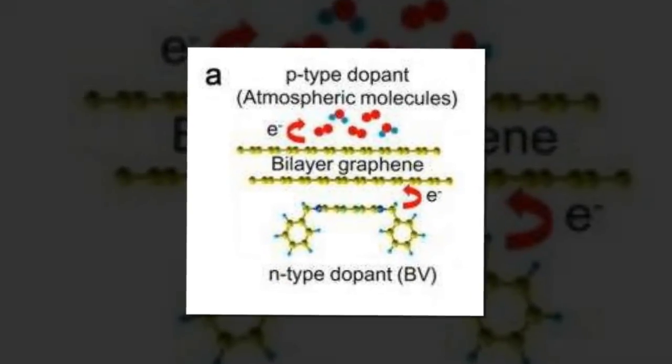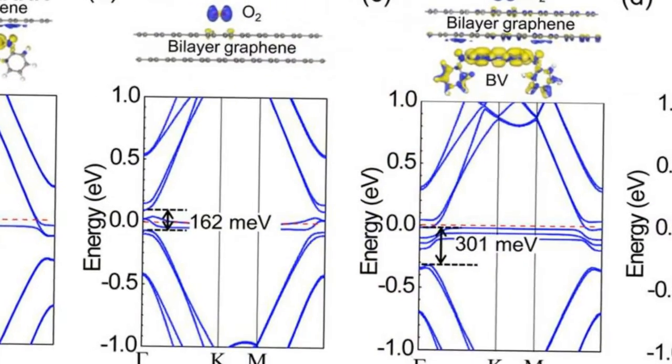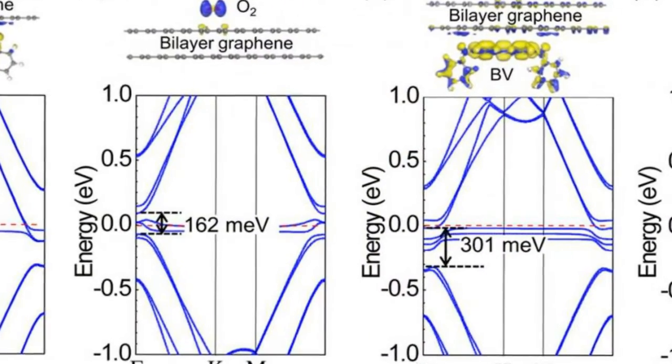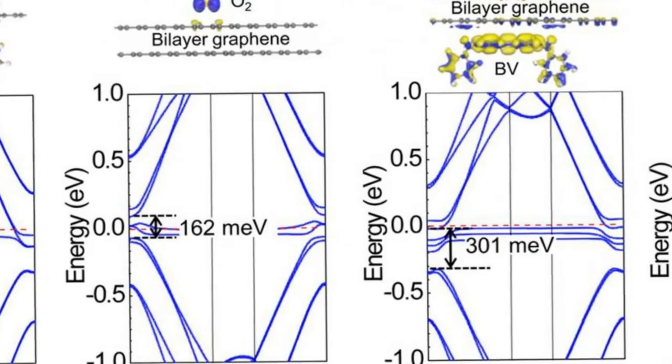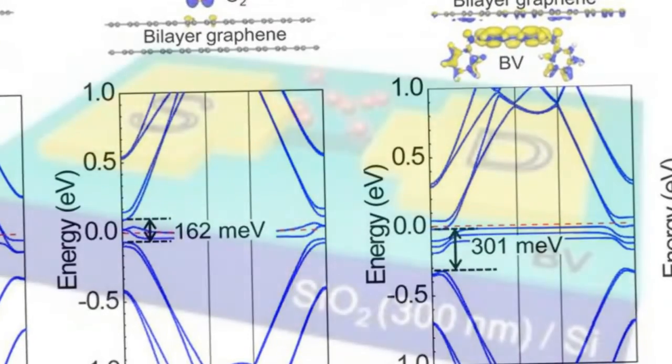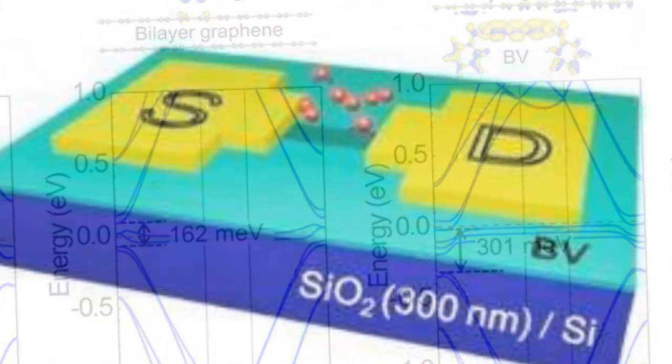In a new study, scientists have opened a band gap in graphene by carefully doping both sides of bilayer graphene in a way that avoids creating disorder in the graphene structure.